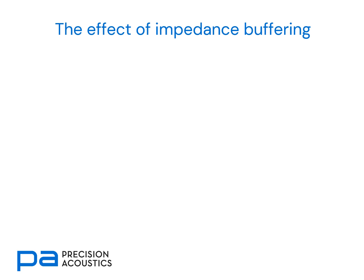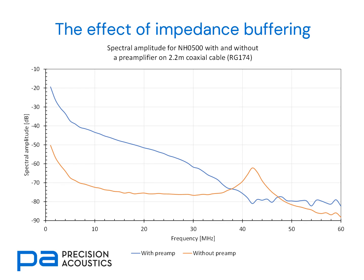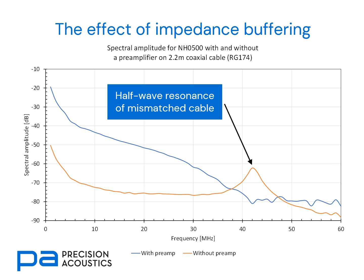If we look at some real devices, we can see just how important this impedance buffering effect is. This graph displays two traces with the same hydrophone connected to a similar length — 2.2 metres — of standard coaxial cable. In the blue trace, we can see what is measured from a broadband acoustic source when we have a preamplifier present. In the orange trace, we see what happens when the hydrophone connects directly to the cable with no preamplifier. We can clearly see there is a 20 to 30 dB reduction in signal amplitude over most of the range, although beyond 40 megahertz this seems to swap over, as we see there's a half-wave resonance from the mismatched cable, giving us an erroneous signal.